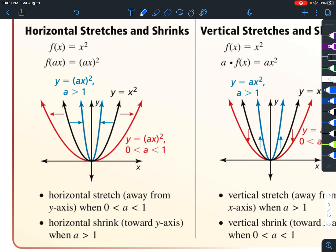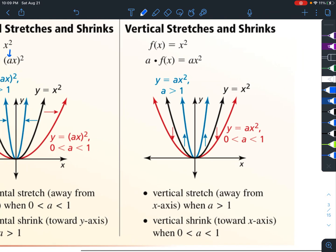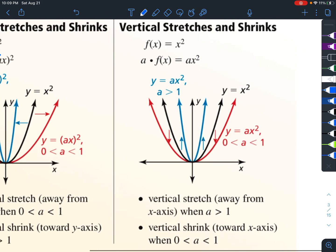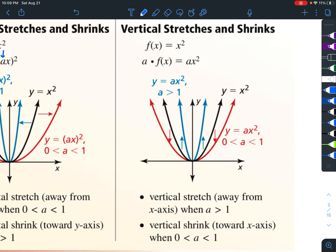A horizontal stretch stretches away from the y-axis when a is between 0 and 1, and notice that the a is inside the squared part. It's a horizontal shrink when a is greater than 1. This is what we're going to be focusing on more in Algebra 2. We have a vertical stretch and shrink, and this is the a in front of the x², not included in the squared part.